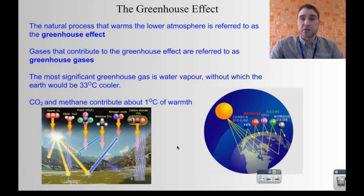So in a greenhouse you have a glass that's trapping heat energy and makes it harder for the heat energy to escape. The gases that do this in the atmosphere are called greenhouse gases. The major greenhouse gas is water vapour. Without water vapour the Earth would be 33 degrees Celsius cooler. Then there's other greenhouse gases, carbon dioxide and methane, they contribute about one degree of warmth and then there's others as well.